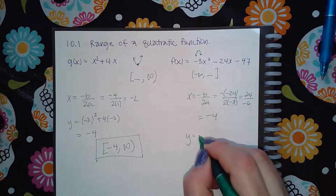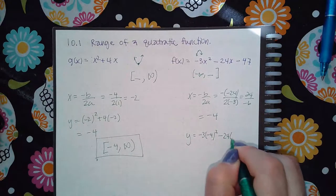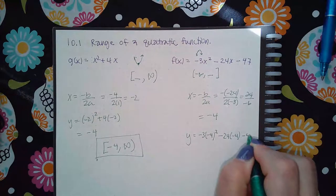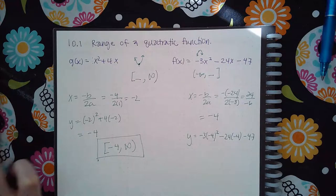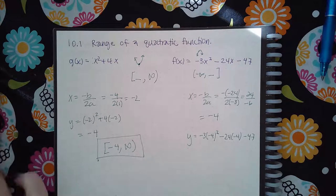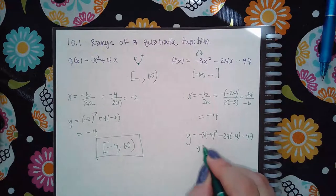So the y-value is negative three times negative four squared minus 24 times negative four minus 47. And so we get the y-value of one.